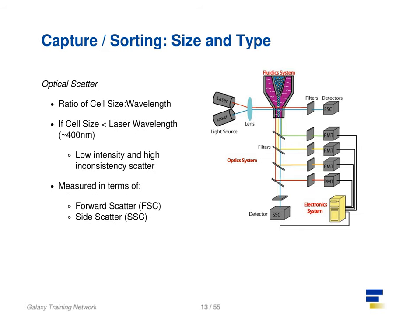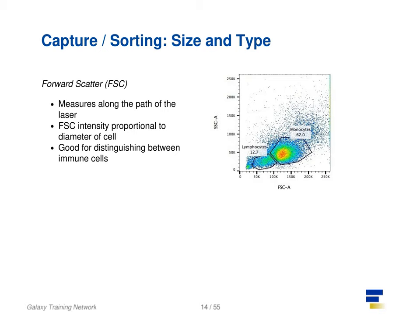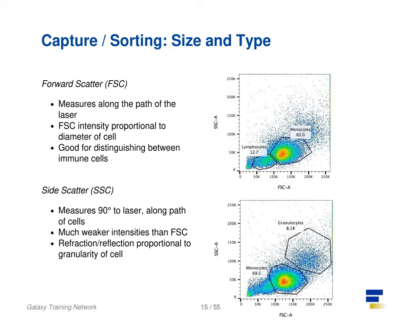Optical scatter properties can be used to probe size and consistency of the cell, where cells with a smaller size than the laser wavelength yield lower intensities and more inconsistent scatter patterns. There are two main types of optical scatter: forward scatter and side scatter. Forward scatter is aligned with the main laser and measures the diameter of the cell, which is ideal for distinguishing different cells by their size profiles, such as monocytes which are typically larger than lymphocytes as seen on the x-axis of the example image. Side scatter is perpendicular to the main laser and measures the granularity of the cell, ideal for distinguishing cells with less defined internal structures, such as granulocytes on the y-axis of the example image.